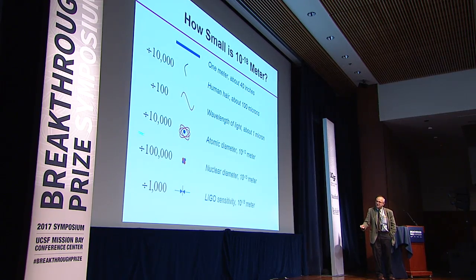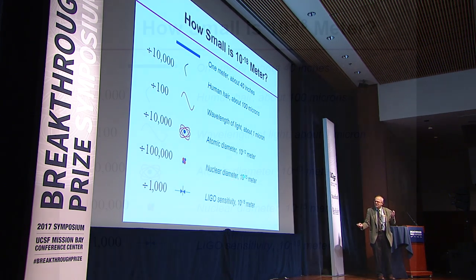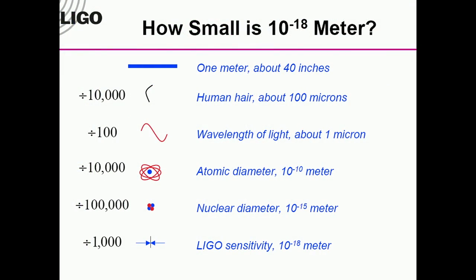Divide by another hundred thousand and you have the inside of an atom — the nucleus. You can't see that directly; you make machines to do that. But you're still not there — you have to divide by another thousand. The challenge is that we're using light to do the measurement at 10 to the minus 6, but we need to measure at 10 to the minus 18 — a factor of 10 to the 12 has to be gained somehow.